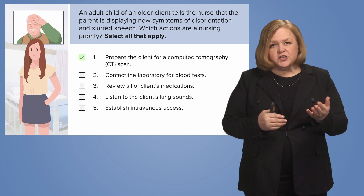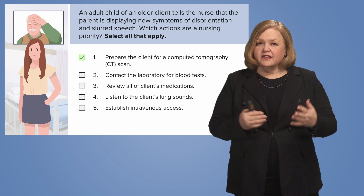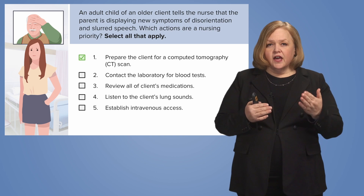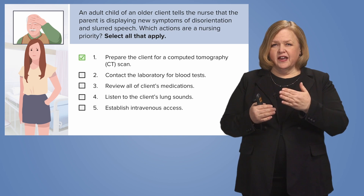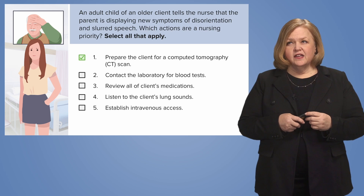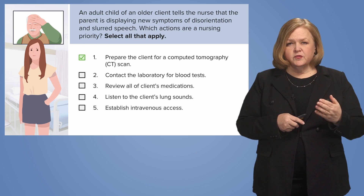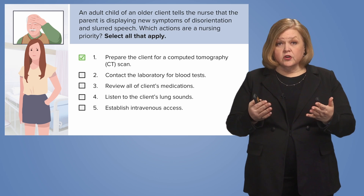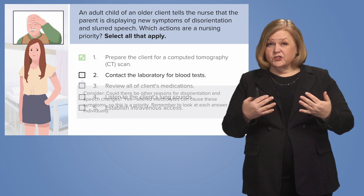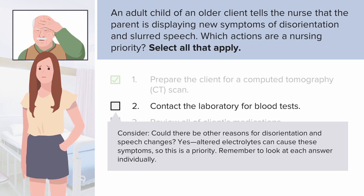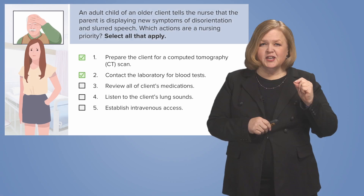The second answer choice: contact the laboratory for blood tests. Is that a priority? Sure, because if electrolytes are off, that patient could display some disorientation — likely not the slurred speech, but we want to be thorough. So yes, we're going to draw lab work on this patient. So far I've selected number one and number two.